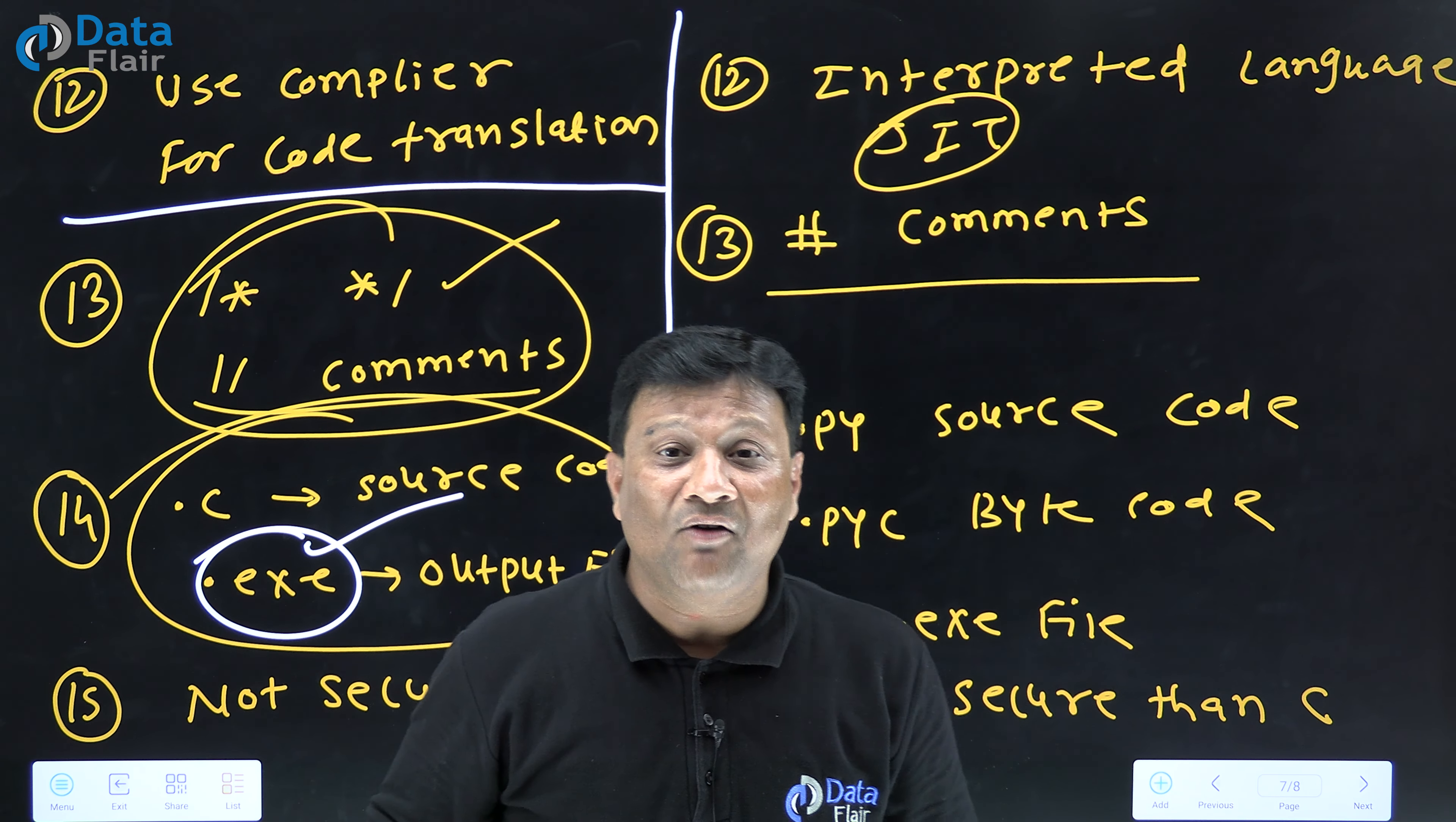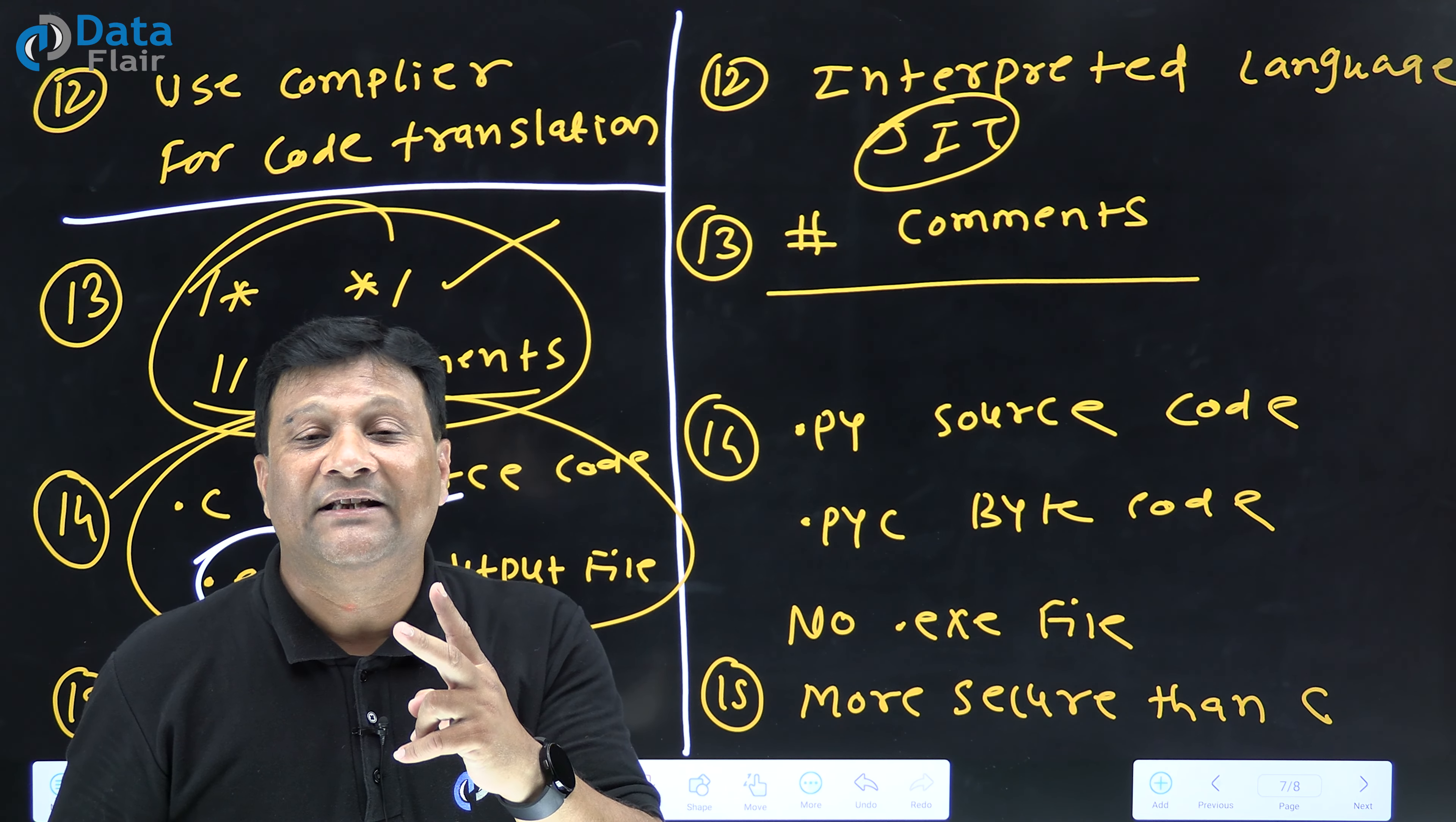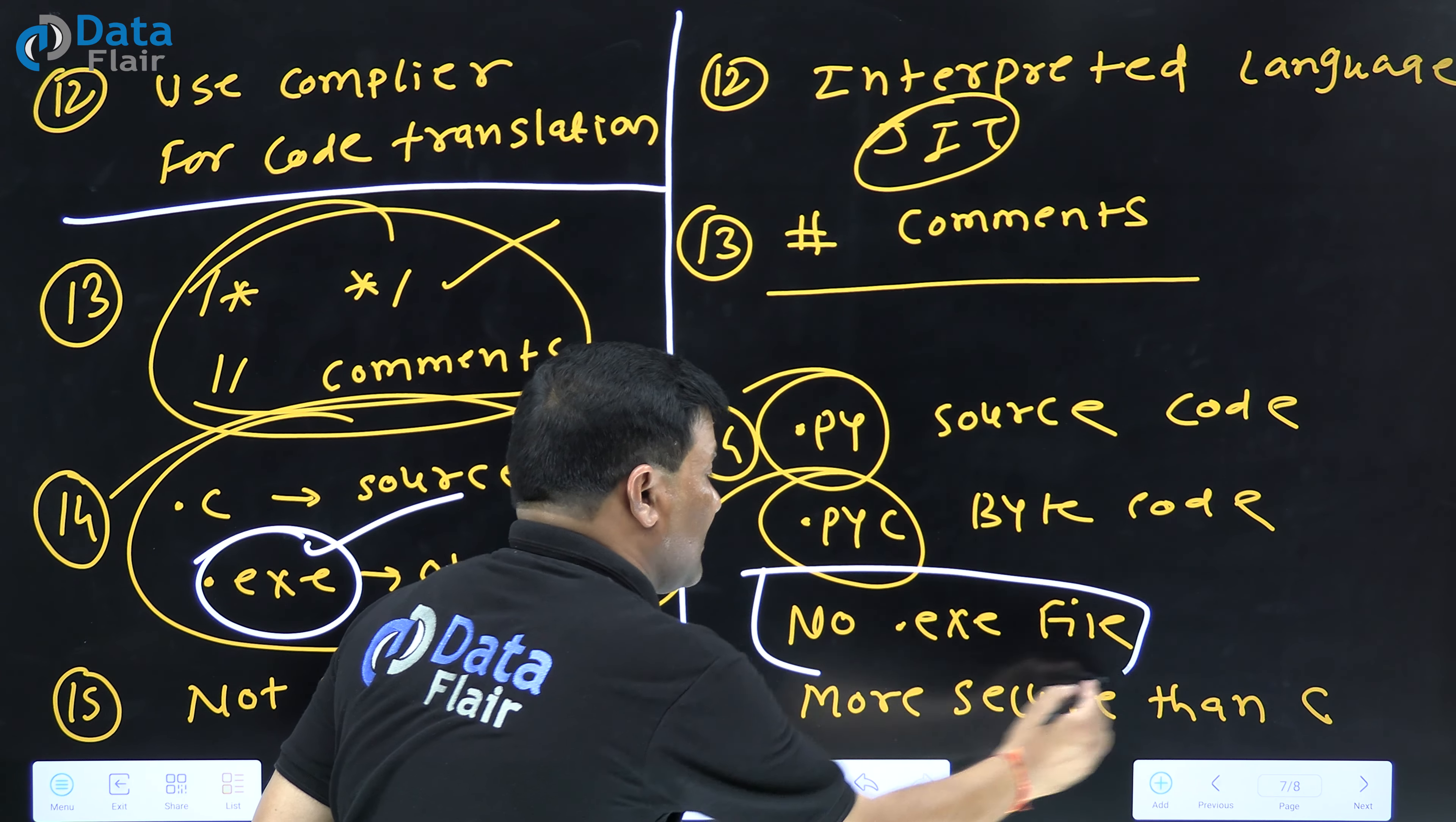But in Python, remember always in Python, there is no .exe file creates. Python never creates .exe file. Python creates two files. First one is .py which contains source code and second one is .pyc which contains bytecode. There is no .exe file in Python.